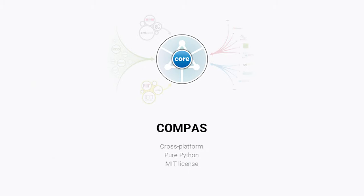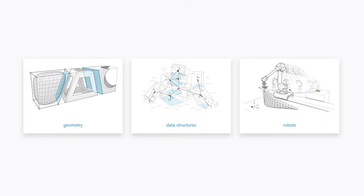The core library of COMPAS is cross-platform and written in pure Python — meaning it runs in IronPython inside Rhino, with fallbacks to C extensions outside Rhino for speed optimizations. It's very liberally licensed under an MIT open source license, which means you can have commercial projects based on it. The core library provides three basic things: geometry primitives, data structures — including graph data structures, meshes, and volumetric meshes — and basic robot support.